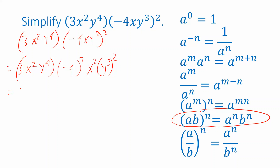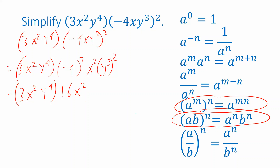Just like in the previous problem, I can rewrite negative 4 squared as 16. X squared is already in good shape. Y cubed squared — that's again going to use this property, so I can multiply the two exponents together: 3 times 2 is 6.